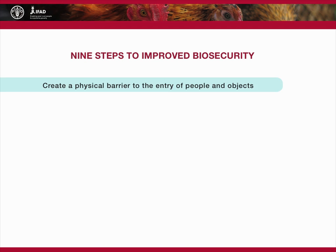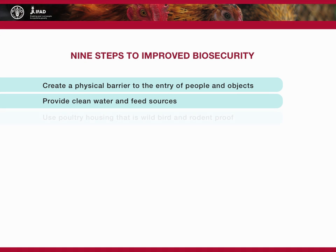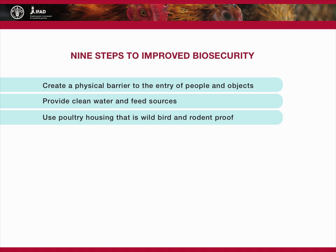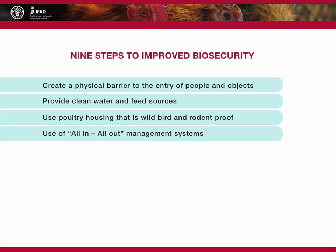Create a physical barrier to the entry of people and objects. Provide clean water and feed sources. Use poultry housing that is wild bird and rodent proof. Use all-in, all-out management systems.